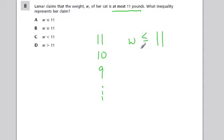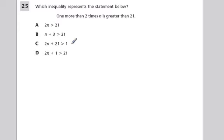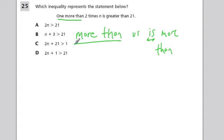This one says which inequality represents the statement below: one more than, not is more than, just more than. So when you see more than, this is confusing I think versus is more than. If you see is in some way, that's representing either an equal sign or in this case is more than, a greater than or equal to sign. But just having more than or less than, that's adding or subtracting, that's addition. So one more than two times n is greater than 21. Well, one more than is we're adding one onto two times n. We could write that like this: 2n is greater than, see that right there, is.